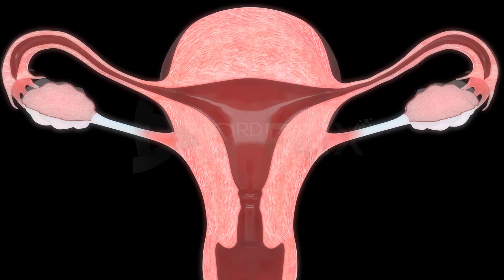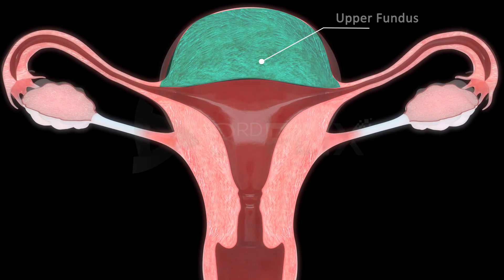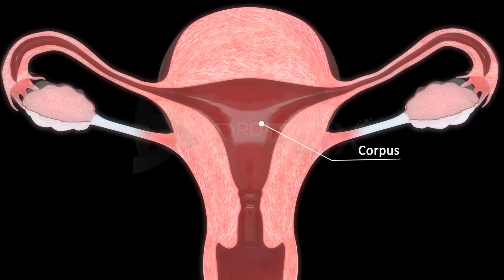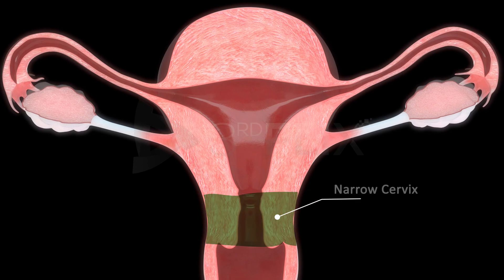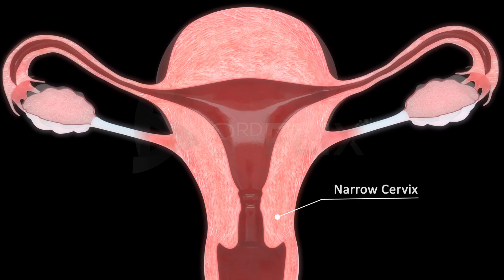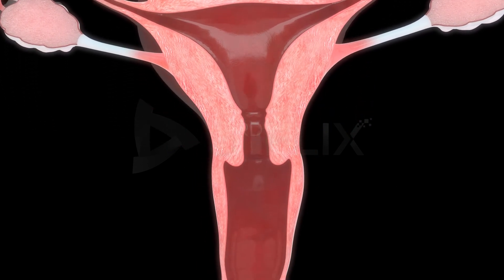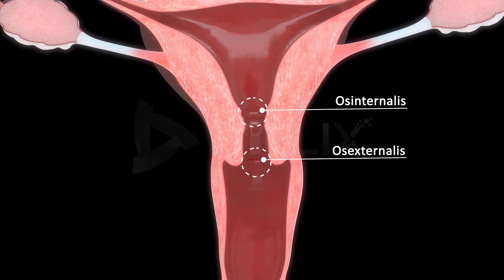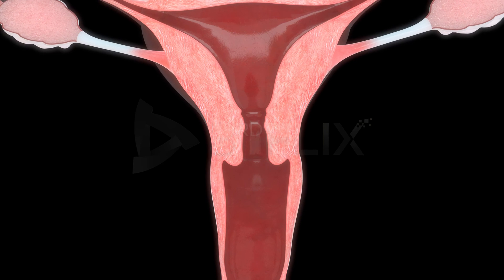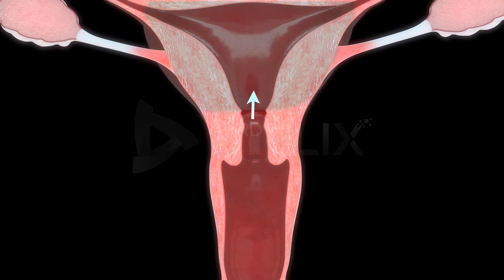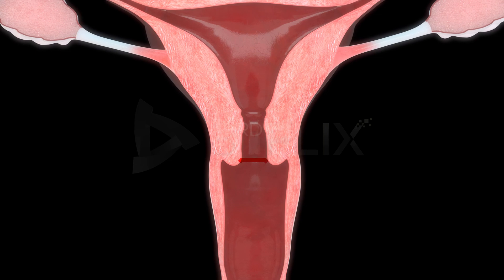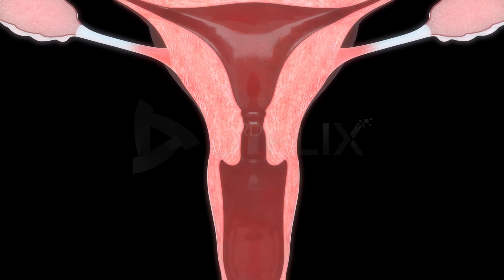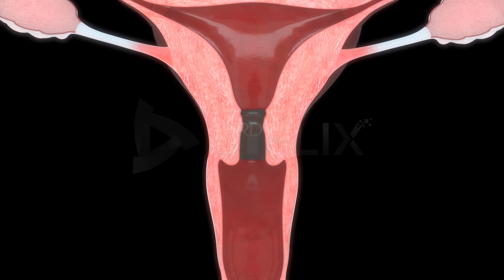The uterus is differentiated into three regions: the upper fundus, middle corpus or body, and the lower narrow cervix. The cervix has two openings: os internalis and os externalis. Os internalis is towards the corpus of the uterus and the os externalis is towards the vagina.